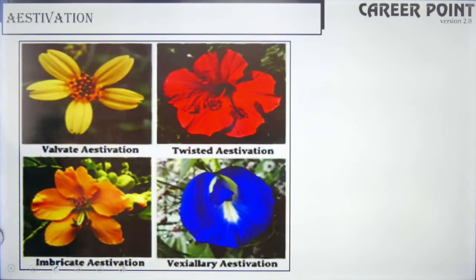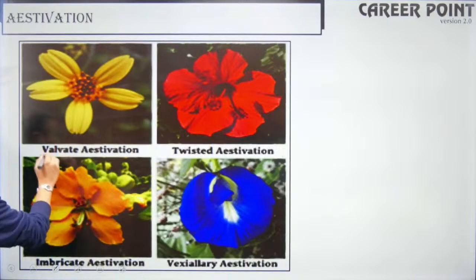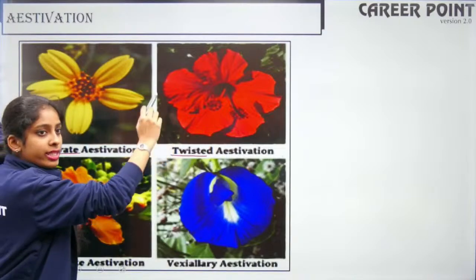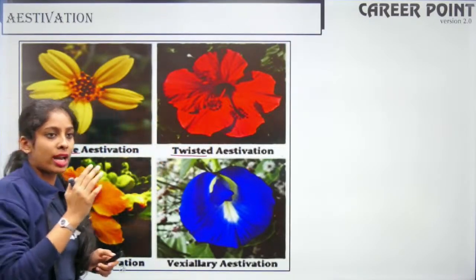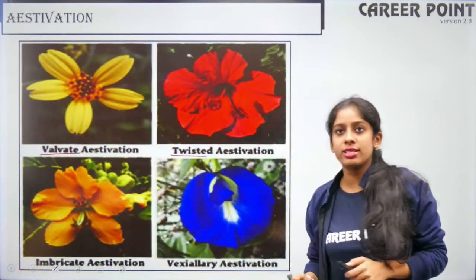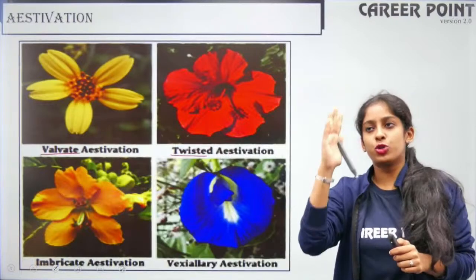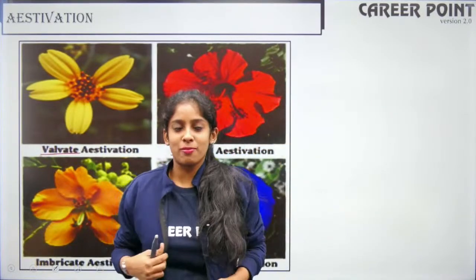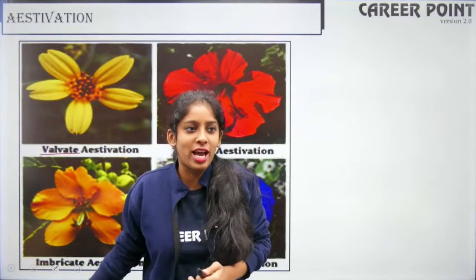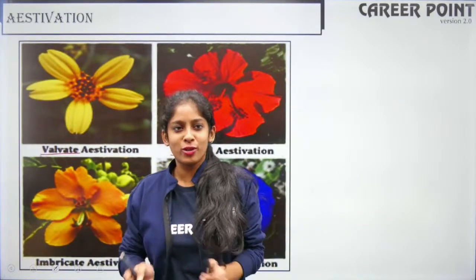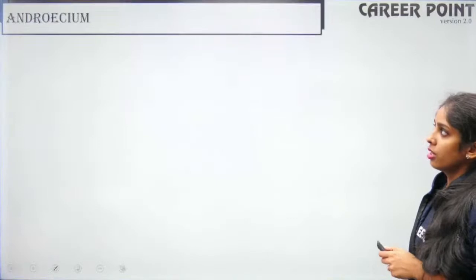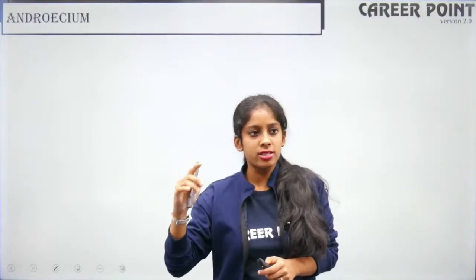Combining all four types of aestivation: valvate — petals just touch each other at the margin; twisted — they overlap in a particular fashion; imbricate — they overlap randomly or obliquely; vexillary — arranged as one standard, two wings and two keel petals.